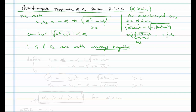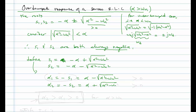Let's define S1 as minus alpha plus the square root of alpha squared minus omega_n squared, and S2 as minus alpha minus the square root of alpha squared minus omega_n squared. Then define alpha_1 as equal to minus S1 — so alpha minus the square root — and alpha_2 equal to minus S2. We can see that alpha_1 is always greater than zero, and so is alpha_2. Furthermore, alpha_2 is always greater than alpha_1, which is greater than zero. This is for the overdamped case.